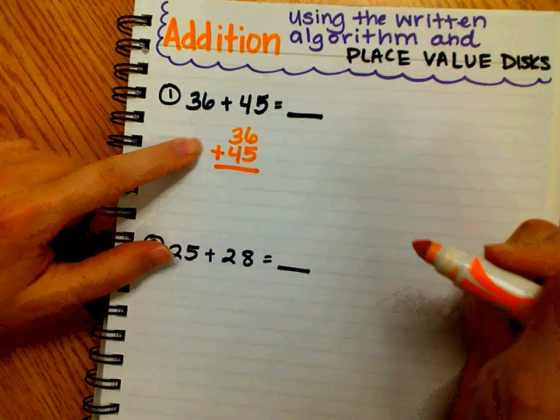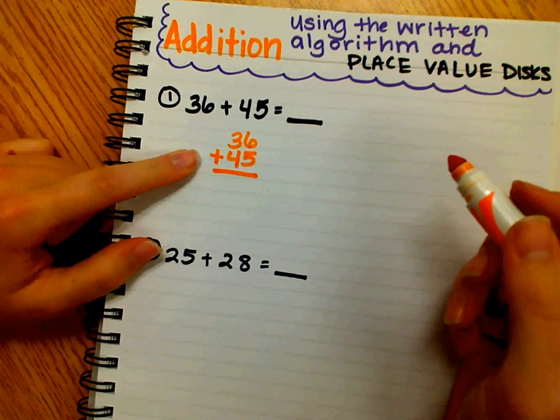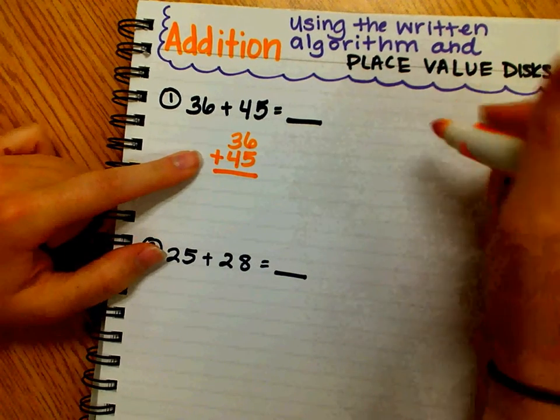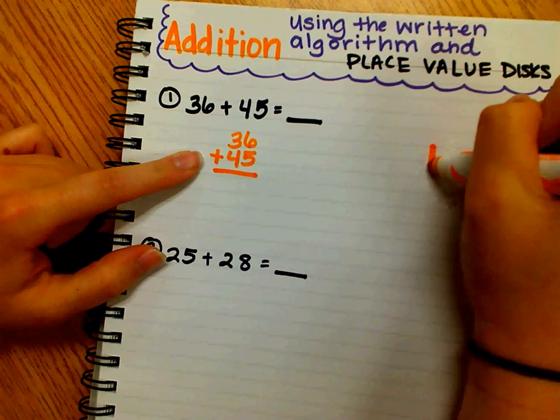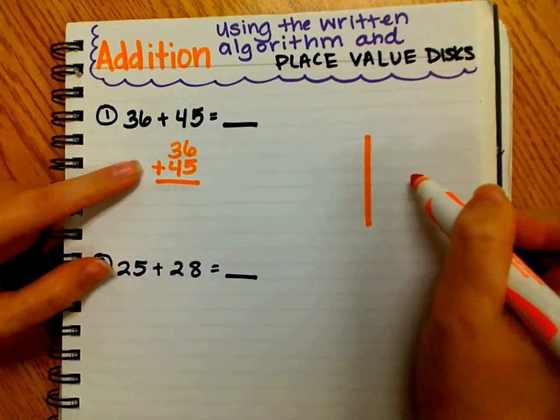Now that we've written the problem vertically, we want to model the problem using a place value chart. I'm just going to draw a line here so that I can separate my tens and my ones.